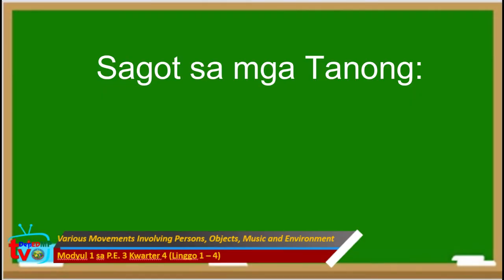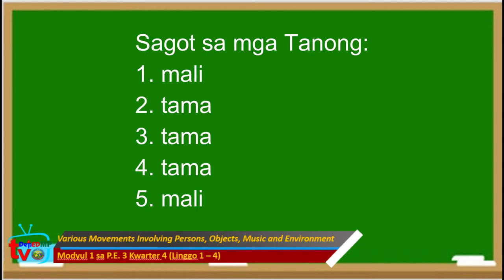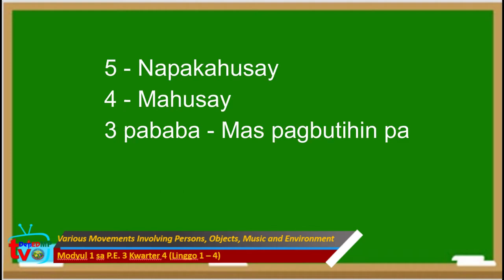Ngayon, iwasto mo ang iyong sagot para malaman kung ilan ang nasagot mo ng tama. Sagot sa unang tanong ay mali. Tama ang sagot sa ikalawa, ikatlo, at ikaapat na tanong. Ang sagot sa ikalimang tanong ay mali. Kung ang nakuha mo ay lima, napakahusay mo. Kung apat naman, mahusay ka. Kung tatlo o pababa ang iyong nakuha, mas pagbutihin pa.